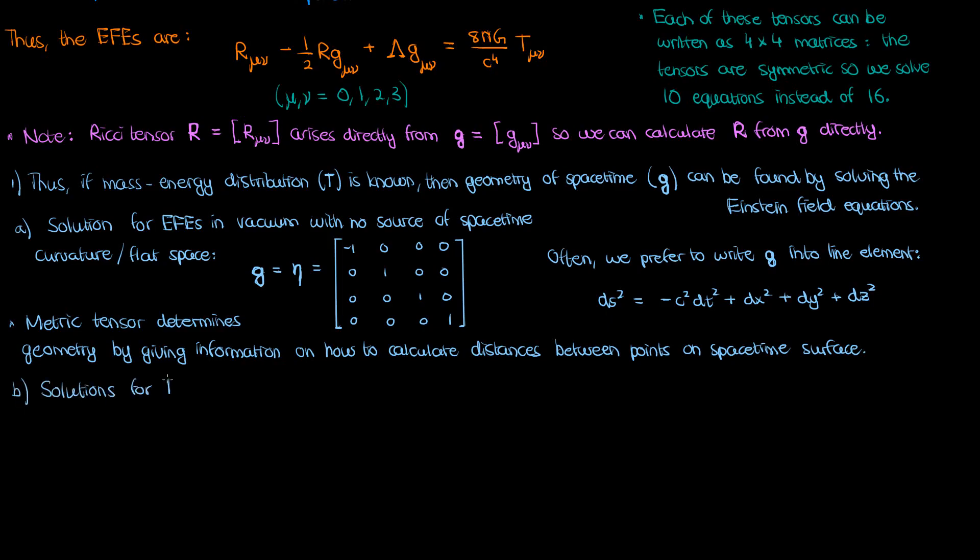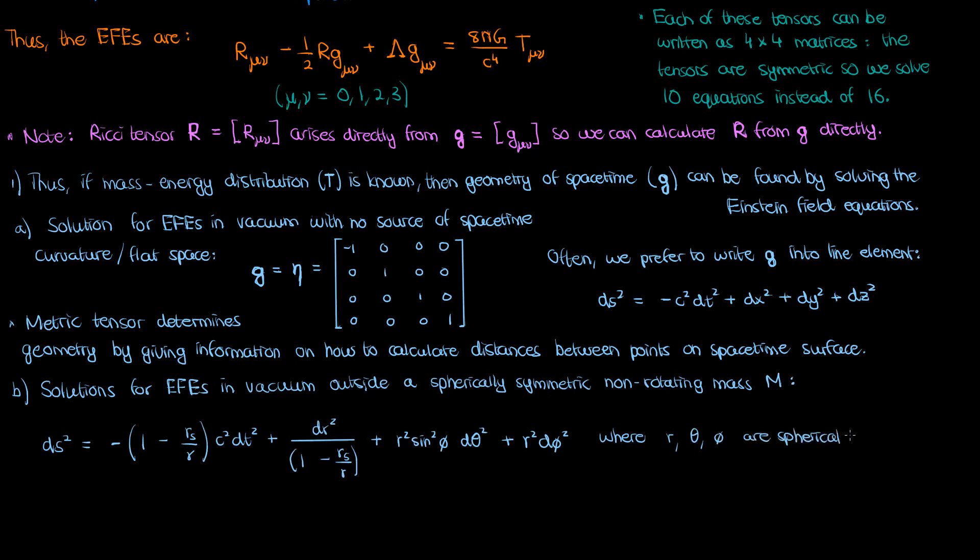For more curved spacetime geometries, we end up with different metric tensors. For instance, if we solve the Einstein field equations for the spacetime geometry outside an uncharged, non-rotating sphere, so in the case of a spherically symmetric mass M, we get a metric tensor which corresponds to the following line element. Note that r, theta, and phi are the usual spherical coordinates. r is the distance from the origin, theta is the angle relative to the positive x-axis, and phi is the angle relative to the positive z-axis.